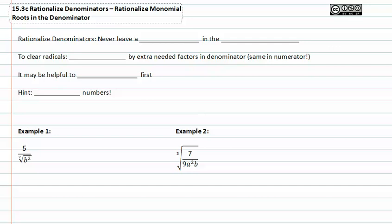In this video we're going to learn how to rationalize monomial roots in the denominator. When you are asked to rationalize denominators, you never leave a radical in the denominator. You may ask why, and the answer is pretty simple — it's very tacky, kind of like wearing sweatpants with heels. It's very tacky and mathematicians don't like you doing it.